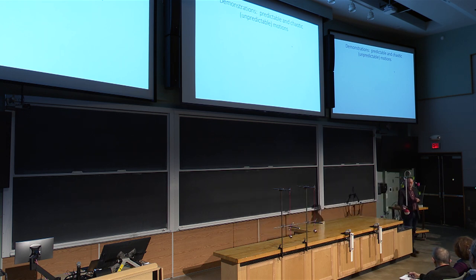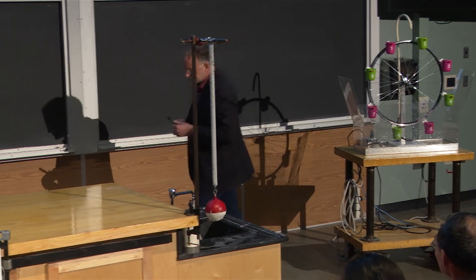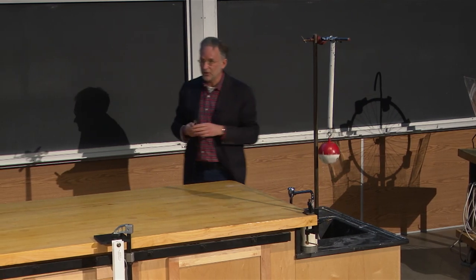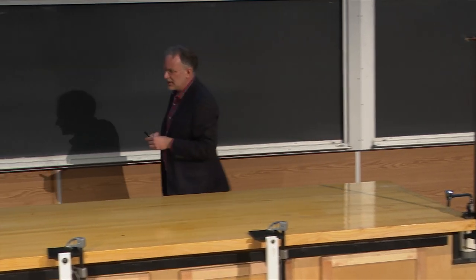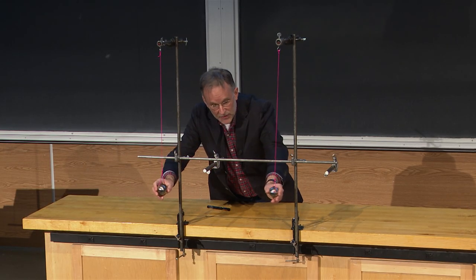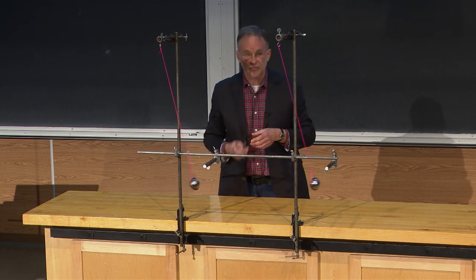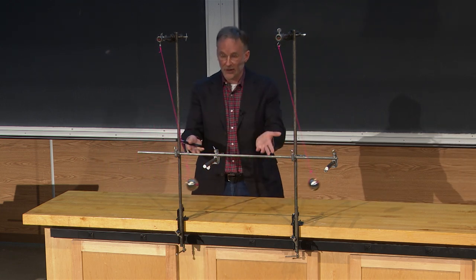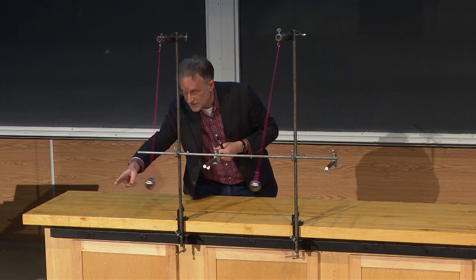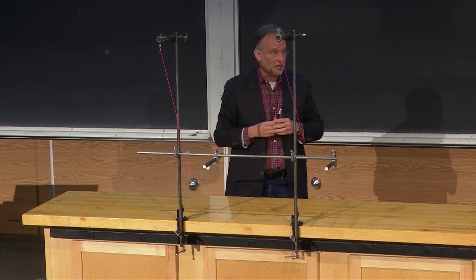Now I want to do some demonstrations of predictable and unpredictable motions. One of the canonical predictable motions is the simple harmonic oscillator. You've all seen that — you have the spring constant and from that you can predict the period. Another canonical example of a predictable motion is a pendulum, and here we have two of them. If you do it at around the same amplitude, they move in tandem for a while. This is showing that if you have a linear predictable system and you start both pendulums at exactly the same amount, then they would keep moving in tandem. These are predictable motions.